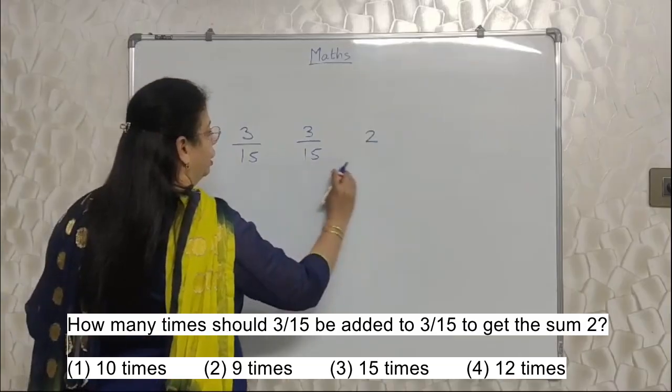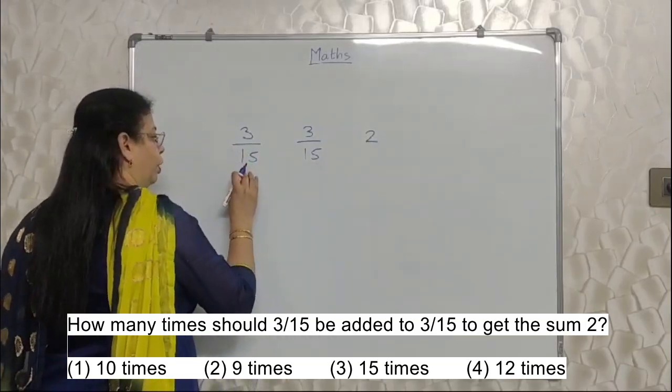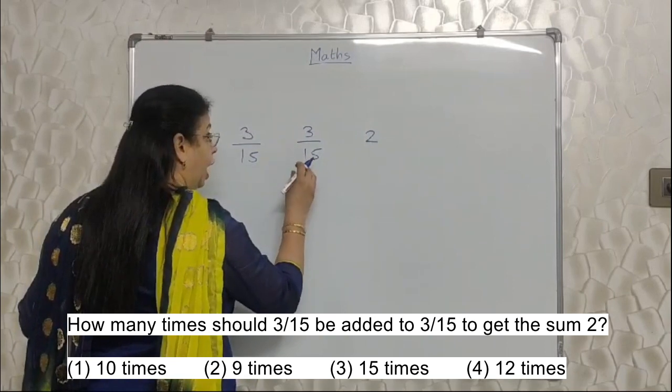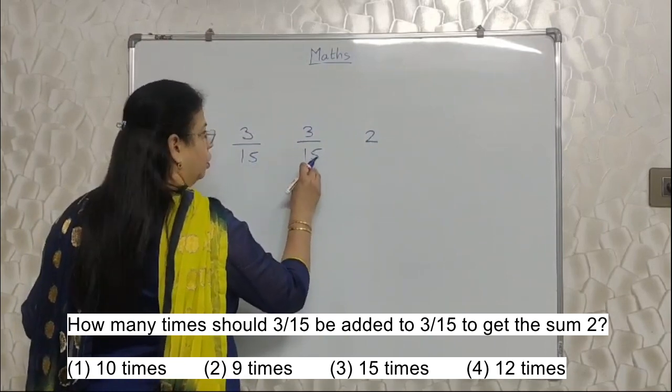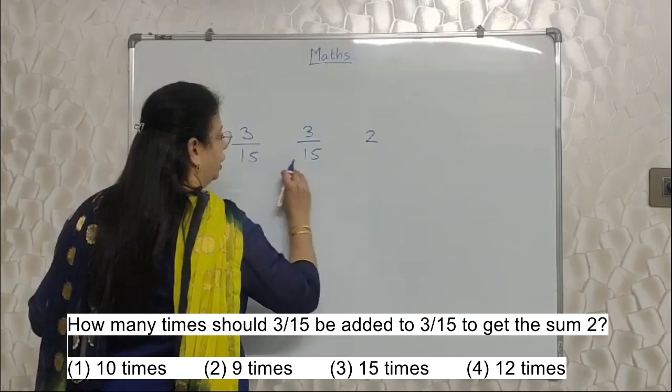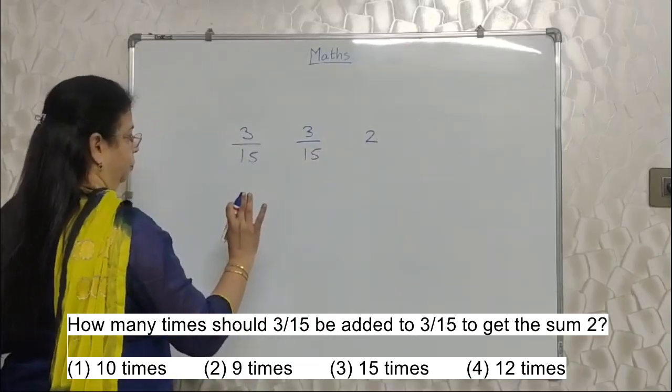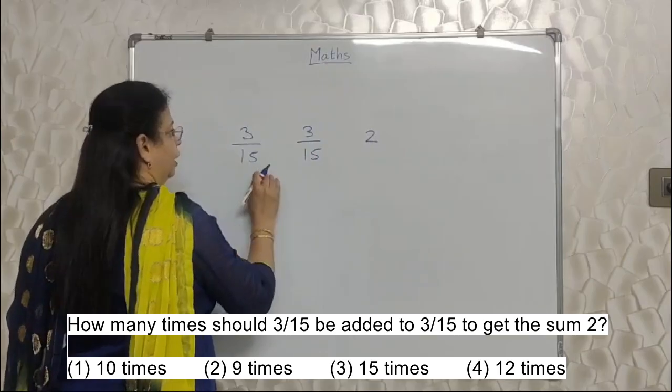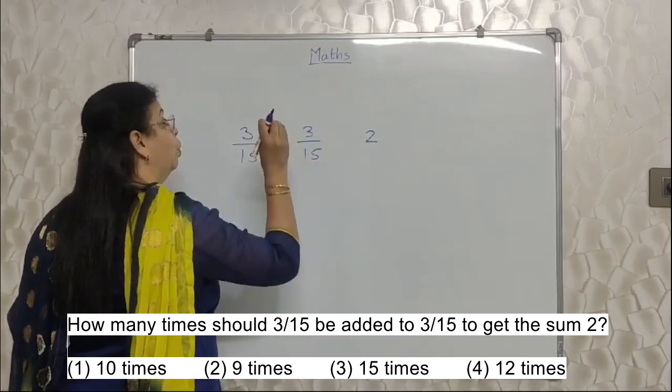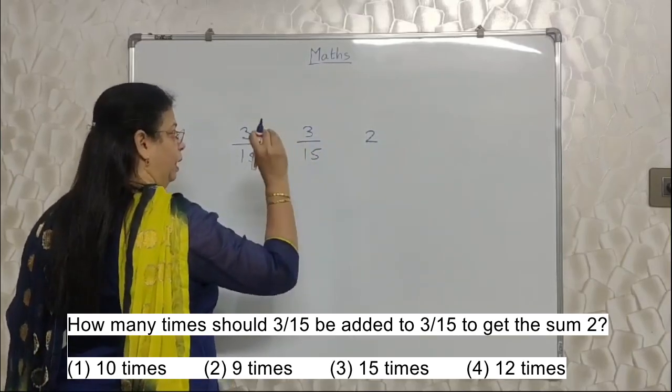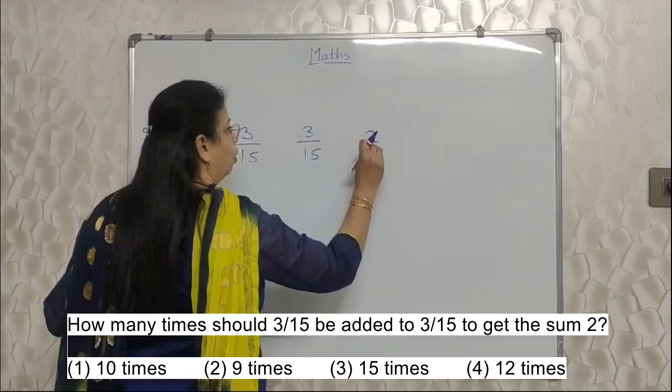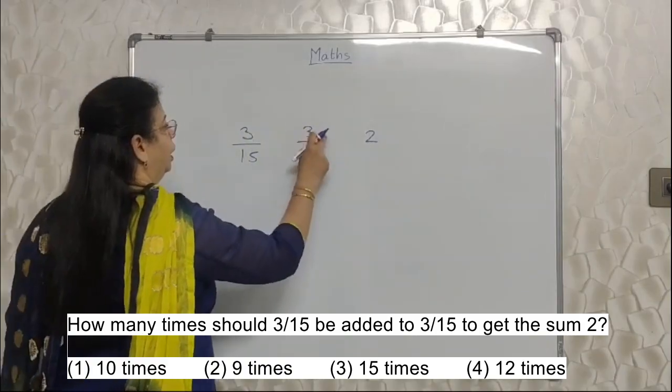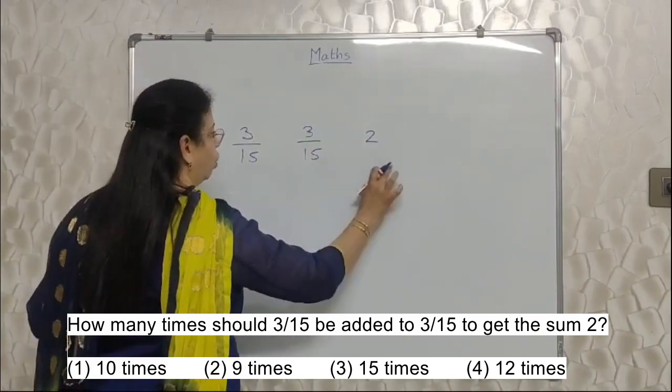So I have written this way. 3 upon 15 is already there. In that, they want to add 3 upon 15 how many times to get 2. So I have written these numbers in this order. First thing is whatever is already there. Next number is what we need to add multiple times. And this is the ultimate answer what they are expecting from us. So 3 upon 15, 3 upon 15 and 2, I have written in this order.